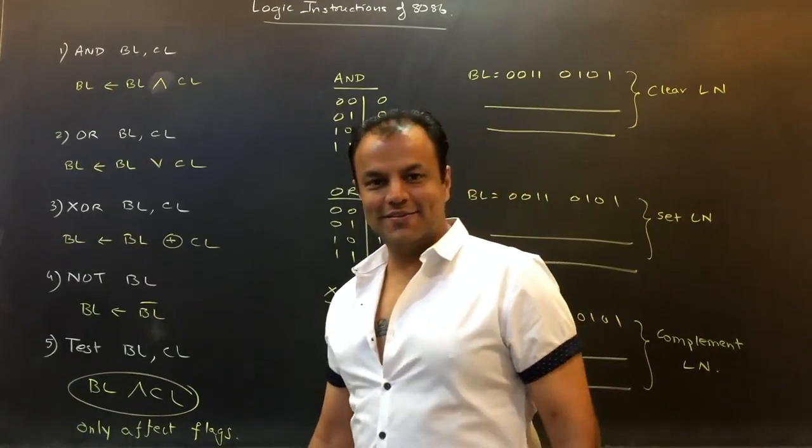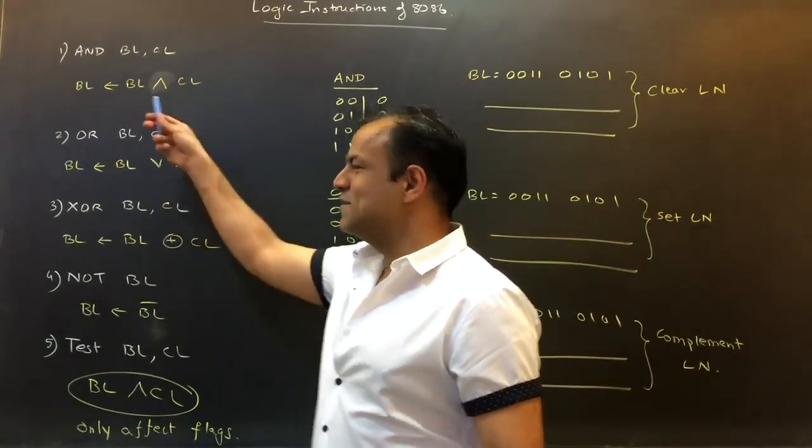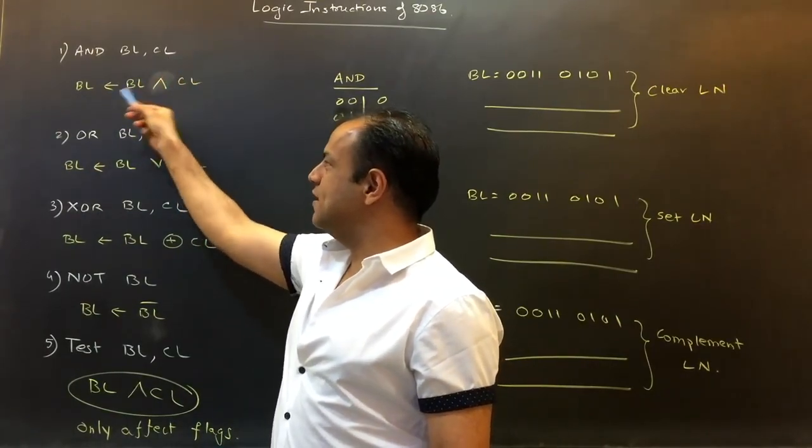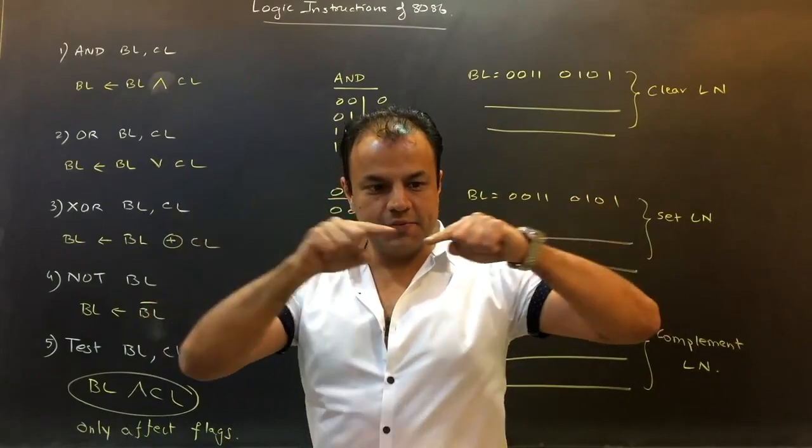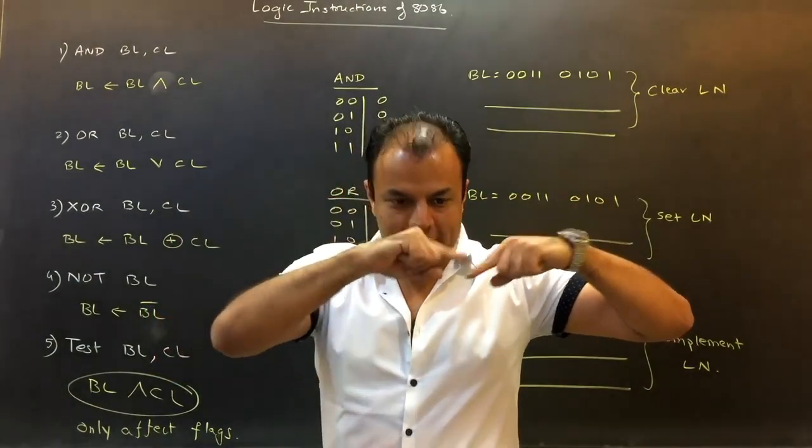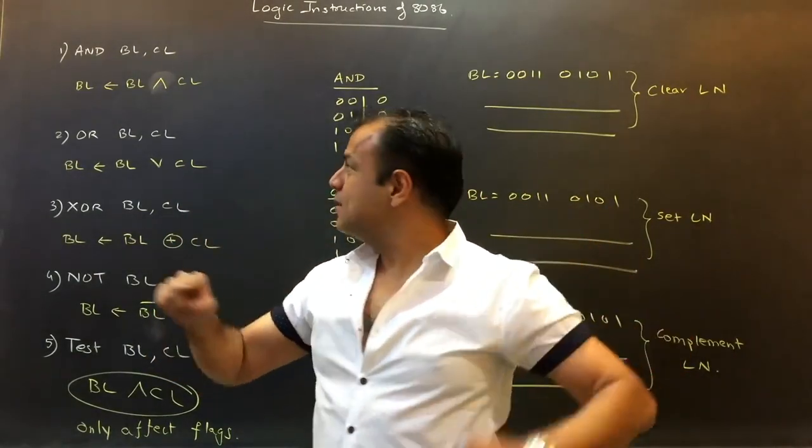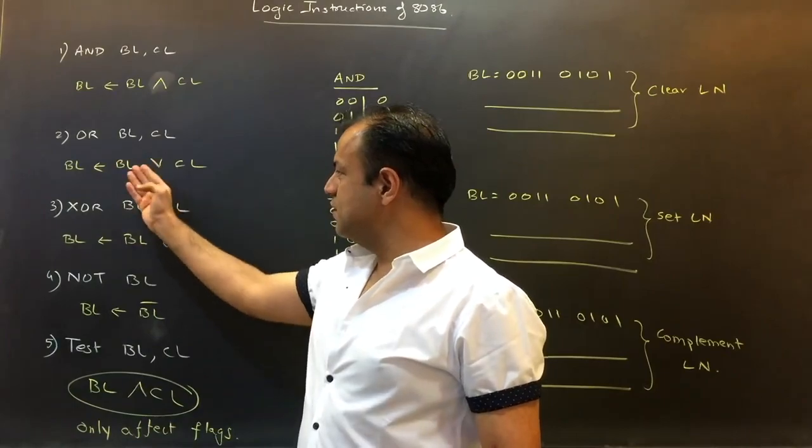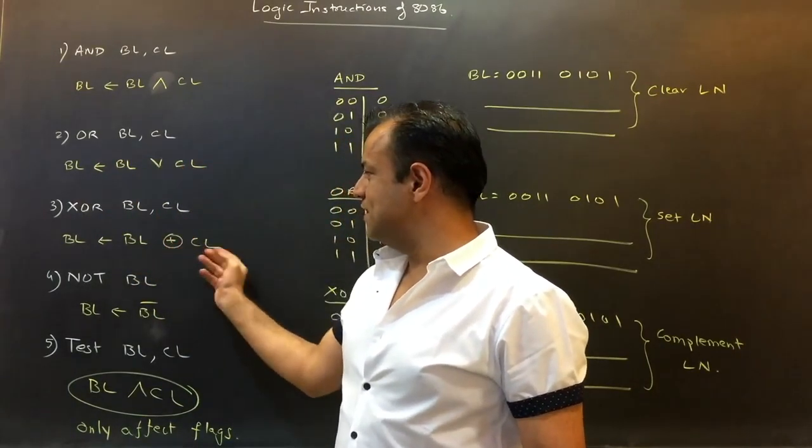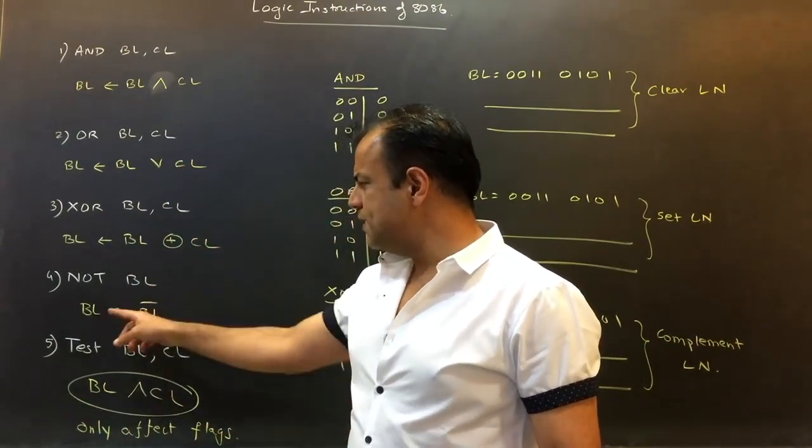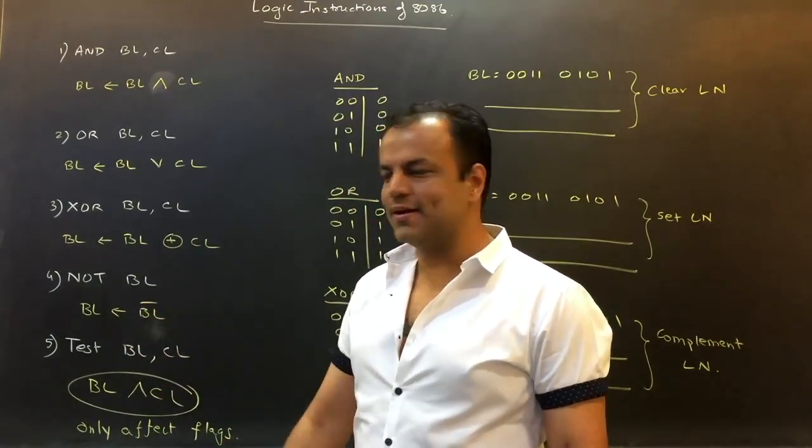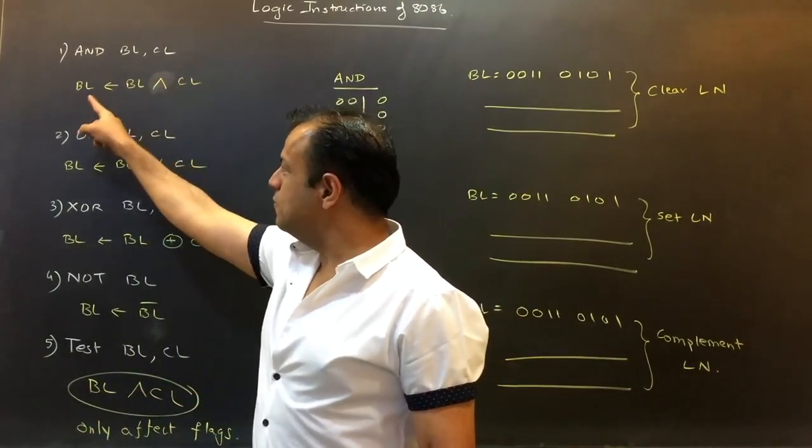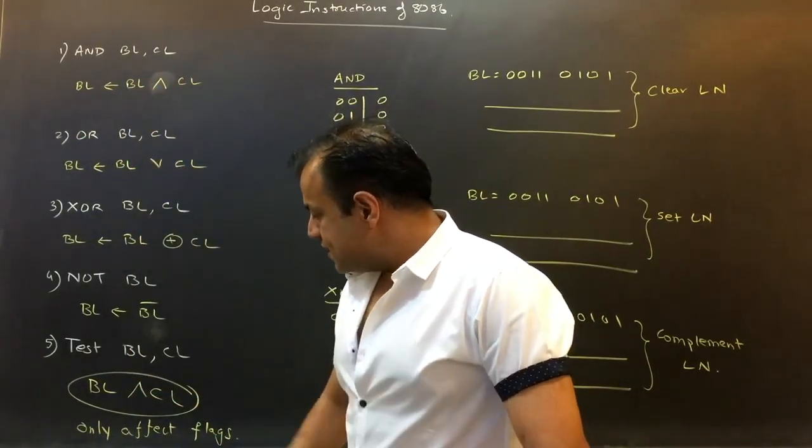Logic instructions exploit the logic gates. You know the three basic gates: AND gate, OR gate, XOR gate. So instructions are very simple. AND BL, CL will do BL AND it with CL and store the result in BL. BL is an 8-bit register, CL is an 8-bit register. When you AND them bit by bit, the result will also be an 8-bit number stored in BL. OR BL, CL will do BL or CL. XOR will do BL XOR CL. NOT BL will simply do BL bar.